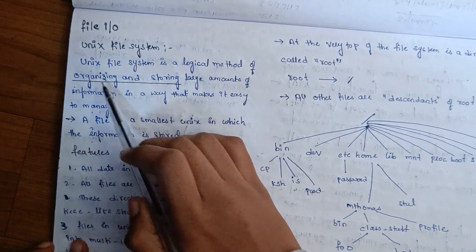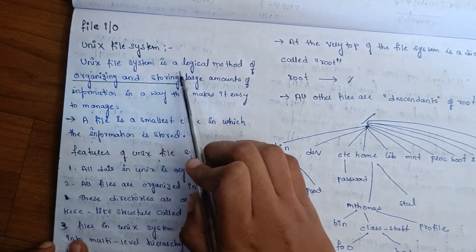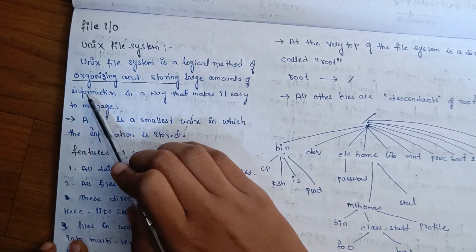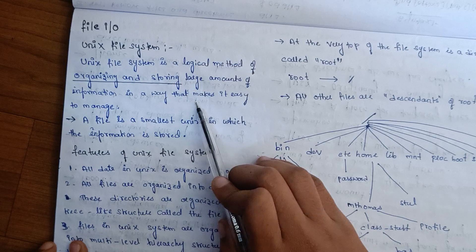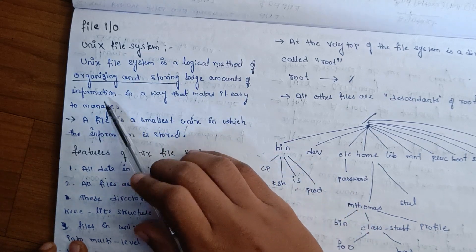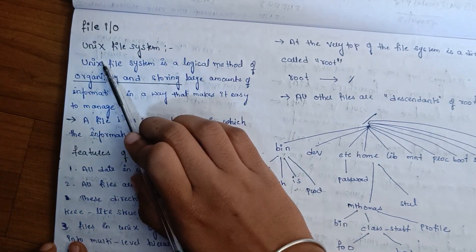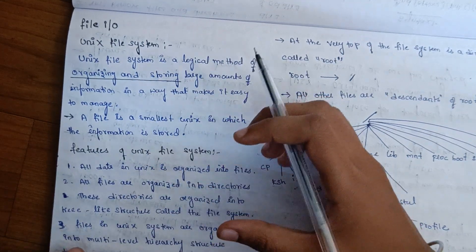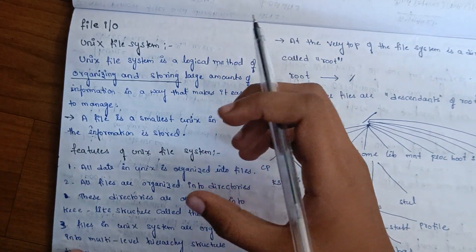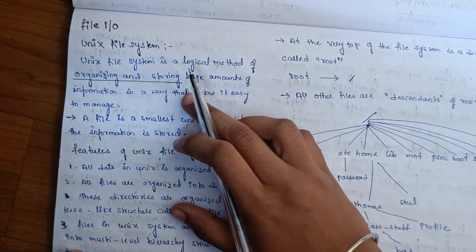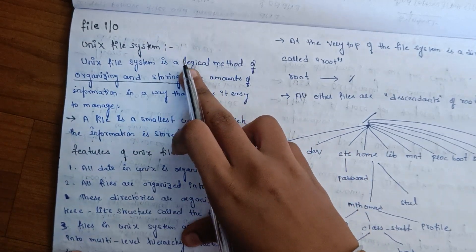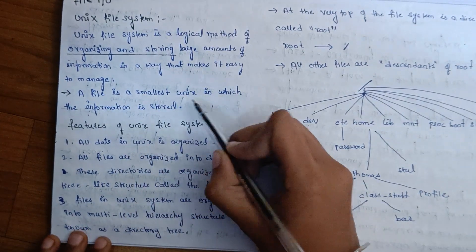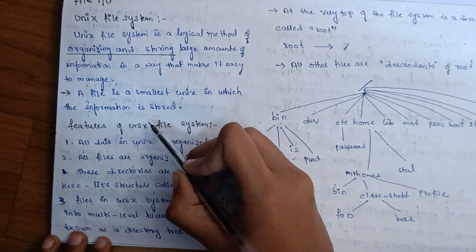Unix File System is a logical method of organizing and storing a large amount of information in a way that makes it easy to manage. A file is the smallest unit in Unix in which information is stored.